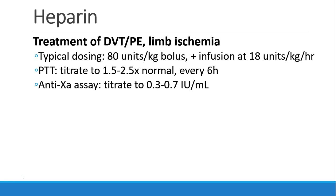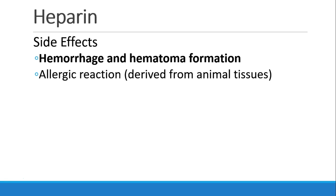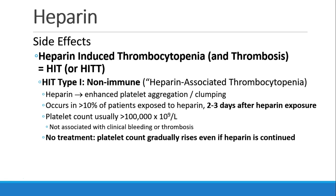If a patient does have a blood clot, the dose of heparin would usually be a loading dose of 80 units per kilogram, followed by an infusion starting at 18 units per kilogram per hour. If you're following PTTs, you would titrate to 1.5 to 2.5 times the normal value, or you can follow anti-factor Xa assays, or you could check ACTs. The most concerning side effect from heparin is hemorrhage or hematoma formation. Patients can also have allergic reactions, since heparin does come from animal tissues.